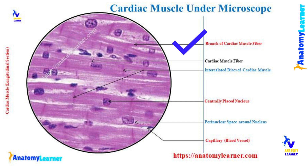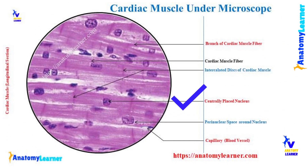The sample muscle fibers show short cylindrical and branching patterns. Each of the individual muscle fibers is made of cardiac myocytes. Individual myocytes possess a single or two nuclei which are located at the center of the cell.